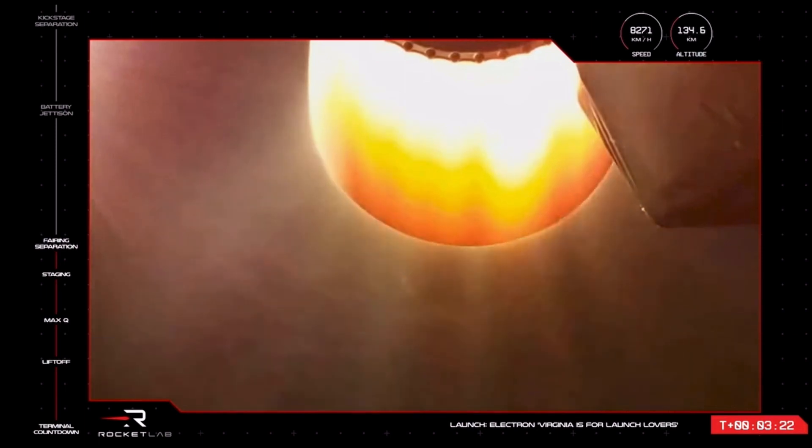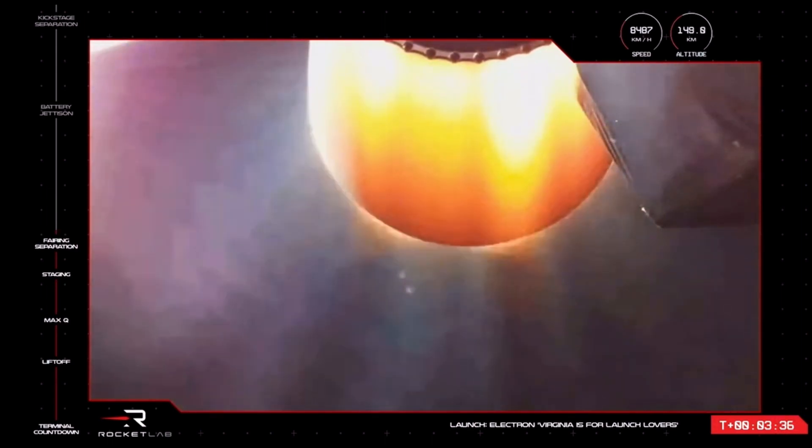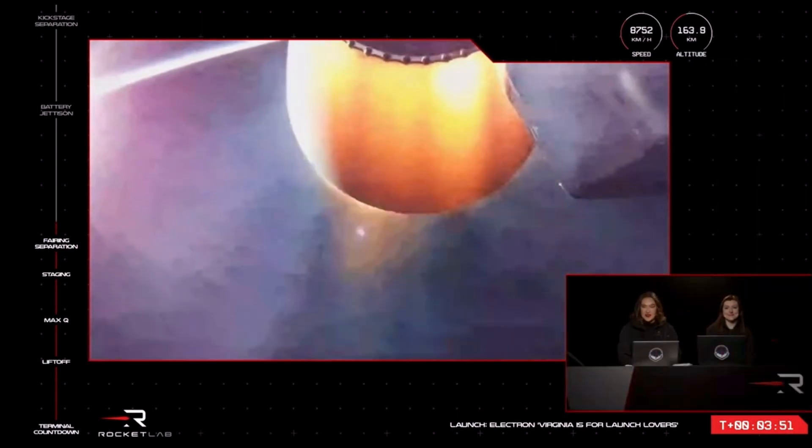Guidance is nominal. Stage 2 propulsion, holding nominal. Coming up on 4 minutes into flight of Virginia is for Launch Lovers, our 33rd Electron mission.